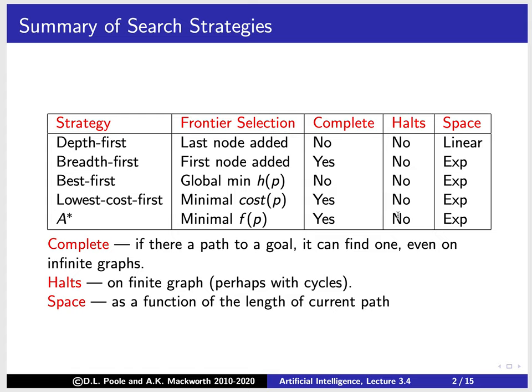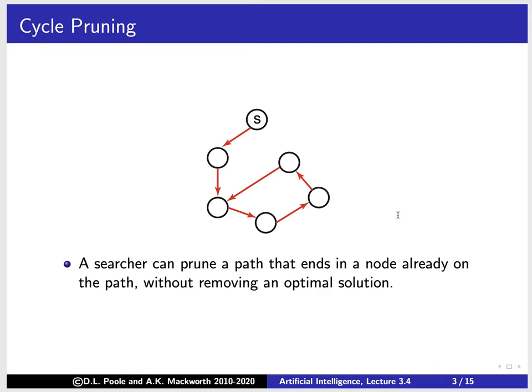We're going to look at a couple of ways of solving that problem. The first one is called cycle pruning. If we have a cycle from s and we go all the way around, once we've reached a point we know there's no point in continuing around this cycle. If there's a solution that goes elsewhere, we would find it without going all the way around the loop. So it's always sensible to prune a path that ends in a node already on the path, and we can do that without removing an optimal solution. That's called cycle pruning.